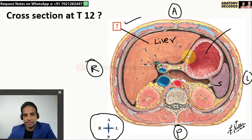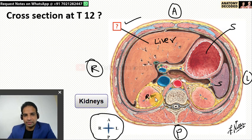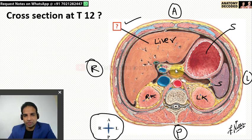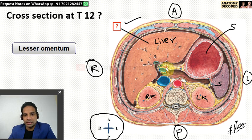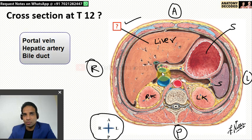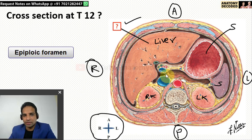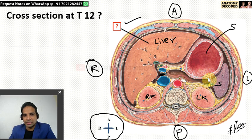Other structures we can see in this section: this is the stomach. This is the right kidney, this is the left kidney. This is the abdominal aorta and this is the inferior vena cava. Connecting the liver and the stomach, there is a part of the peritoneum referred to as the lesser omentum. This is the lesser omentum, and this is the right free margin of the lesser omentum containing the portal vein, hepatic artery and bile duct. Just behind the right free margin, this space is the epiploic foramen — the communication between the greater sac and the lesser sac. Just behind the stomach, this space is the lesser sac.